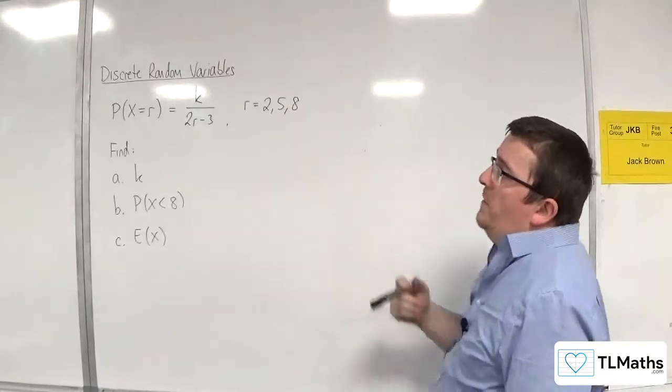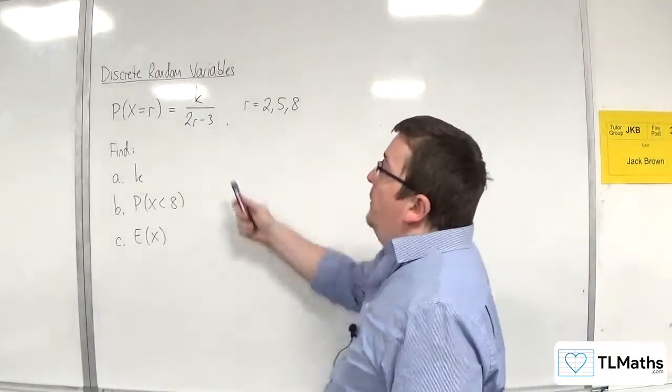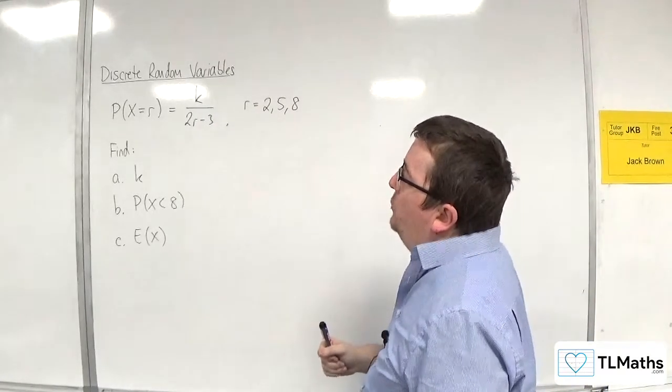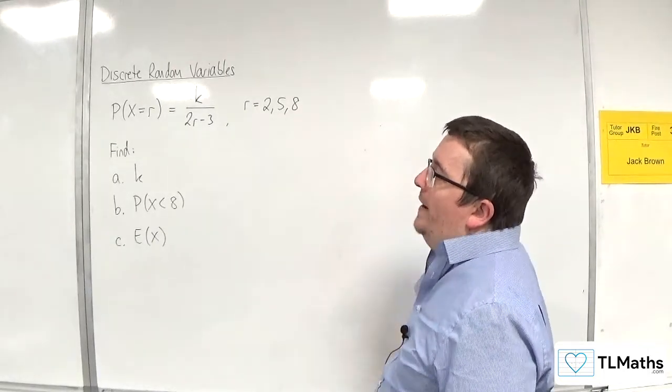In this example, we have probability of x being equal to r written as k over 2r take away 3, where r can take on the values 2, 5, and 8.